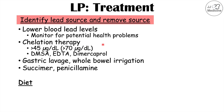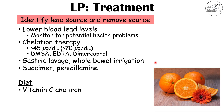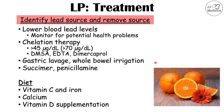Certain dietary factors can contribute to worsened lead poisoning findings. These include vitamin C deficiency and iron deficiency, so it's important to get enough vitamin C and iron. Calcium is also important, and vitamin D supplementation helps reduce the effect on the long bones seen in patients exposed to lead for long periods of time.